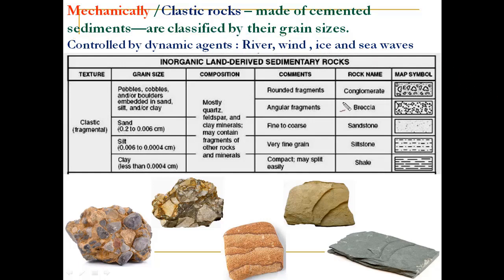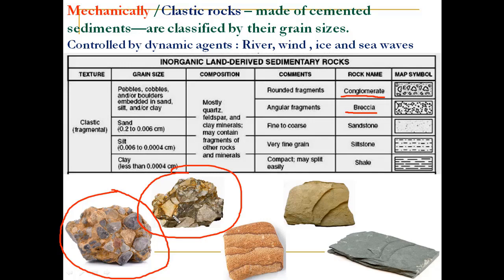With the help of this table, we will understand how different types of mechanically formed sedimentary rocks are formed. First, conglomerate — as you can see in this picture, the rock fragments are rounded and bound together by minerals like clay, silt, or sand. Followed by breccia — in breccia, all the rock fragments are angular, and they have been bound together by clay or silt.